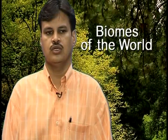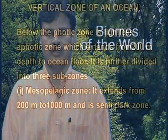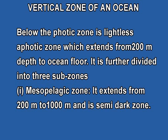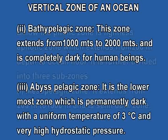Now let us discuss the aphotic zone. The aphotic zone, which is below 200 meters depth, can be classified into three sub-zones. The first subzone is the mesopelagic zone, from 200 to 1000 meters — a semi-dark zone. The second subzone extends from 1000 to 2000 meters and is completely dark. The third subzone is the lowermost zone, which is permanently dark, has a uniform temperature of 3 degrees centigrade, and very high hydrostatic pressure.